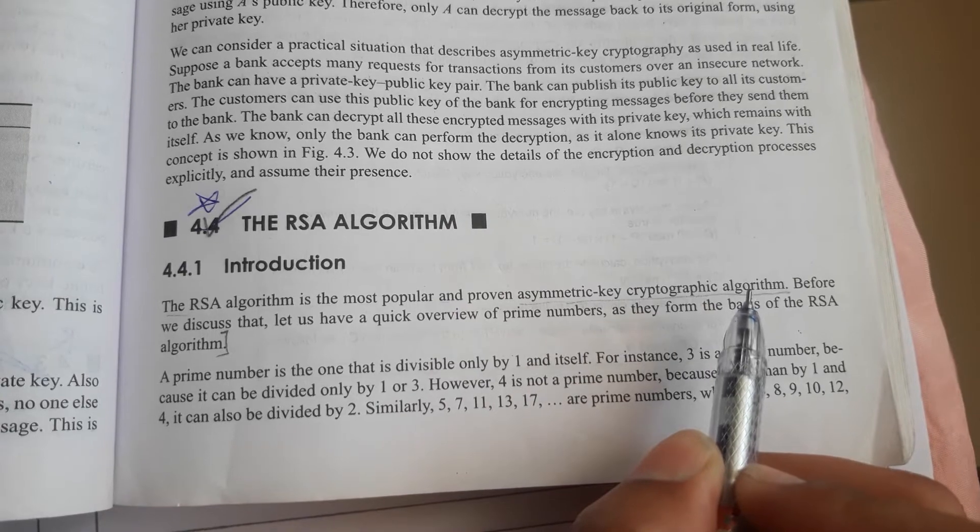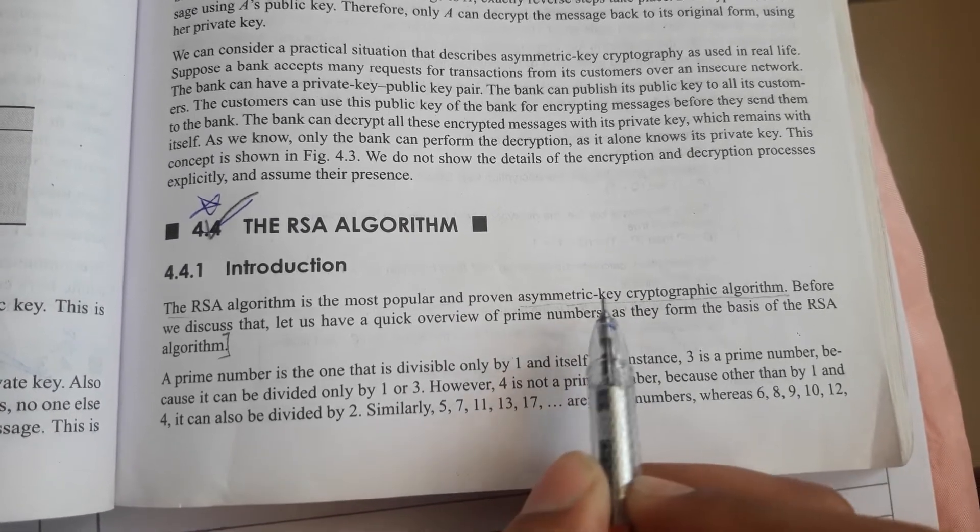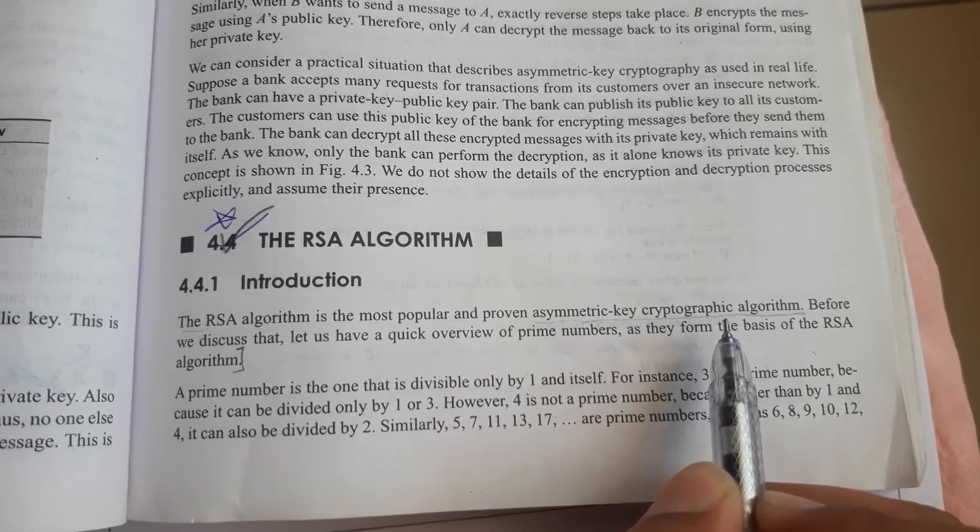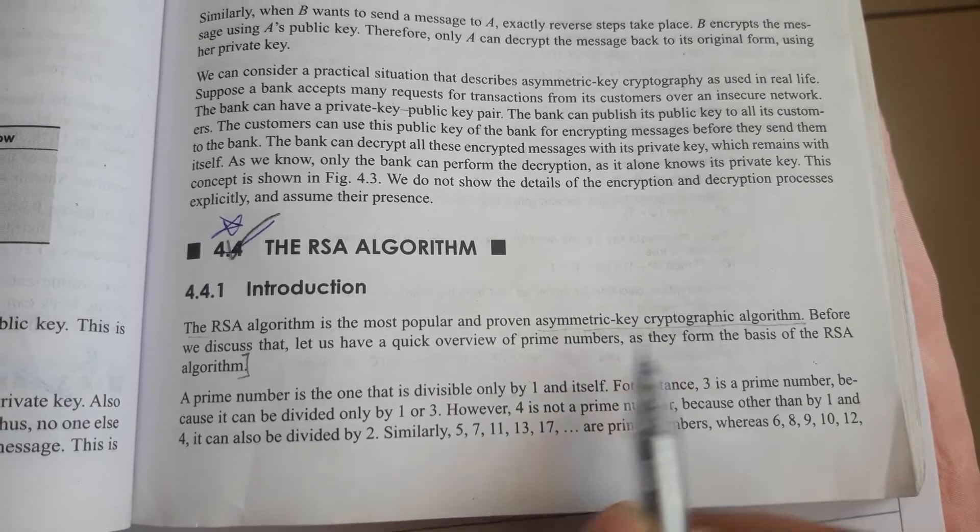another key is used for decryption. In other words, we can say that the private key is used for encryption and the public key is used for decryption. Before discussing the whole RSA algorithm, first of